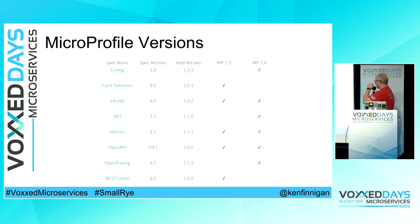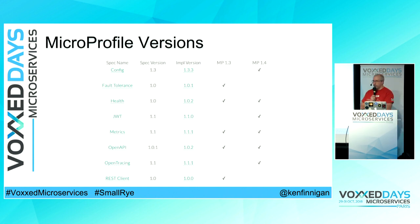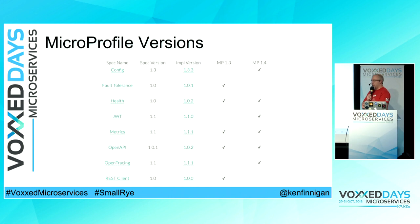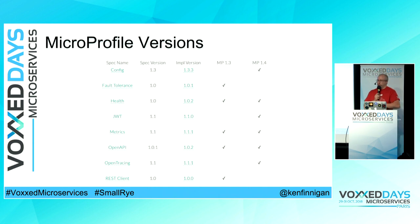It shows the implementation versions for each of the specifications. Some of those might be a little out of date. Essentially we have two columns on the right — MicroProfile 1.3 and MicroProfile 1.4. There are a couple of specifications for MicroProfile 1.4 that aren't implemented in SmallRye yet: fault tolerance and REST client. But they're currently being worked on. And obviously anything that works with MicroProfile 1.4 will work with MicroProfile 2.0, because that's simply a change to the base Java APIs — the actual sub-specification implementation doesn't change for those.